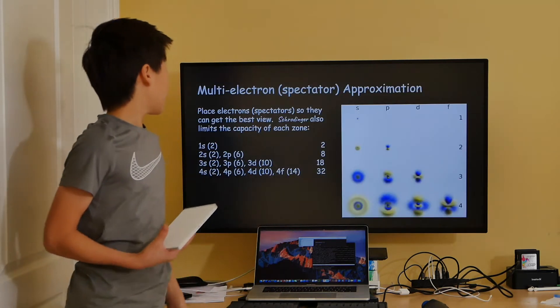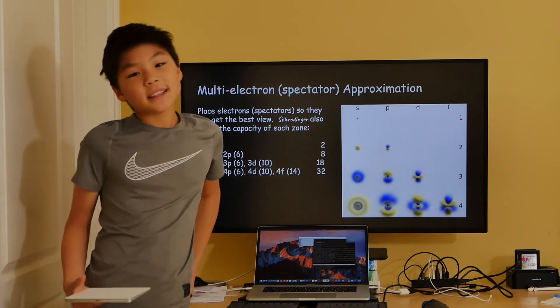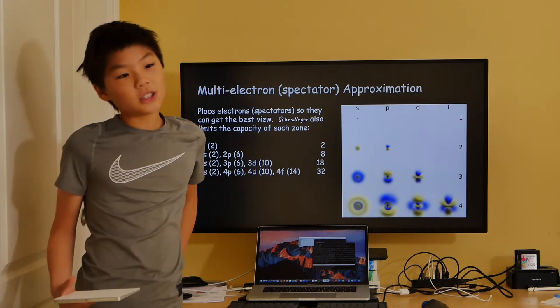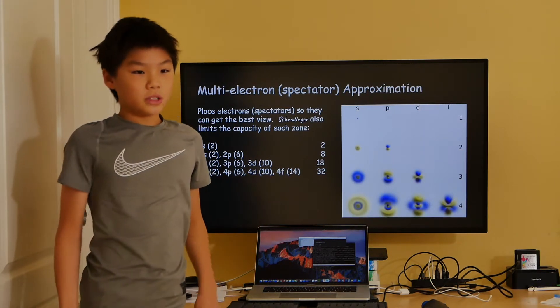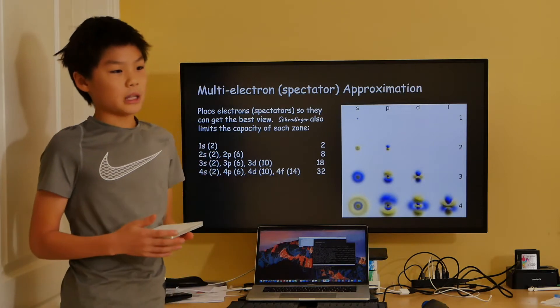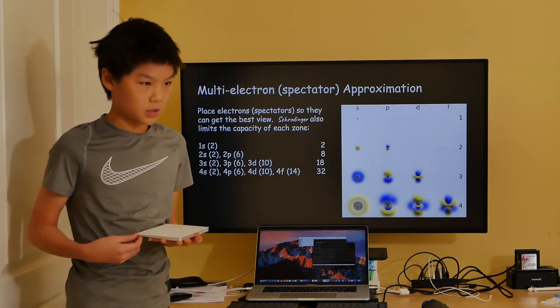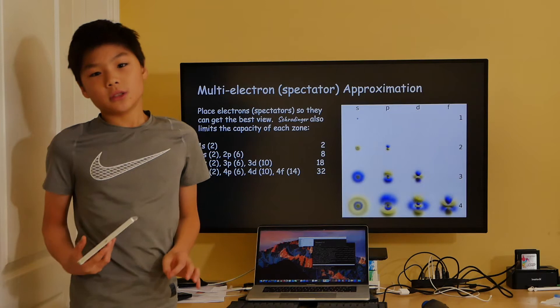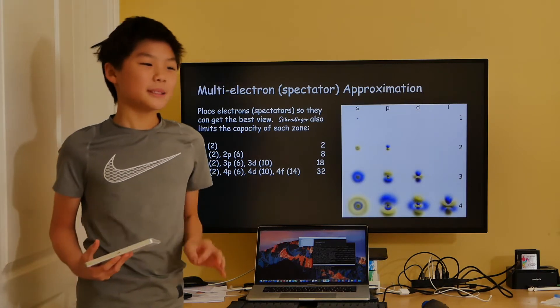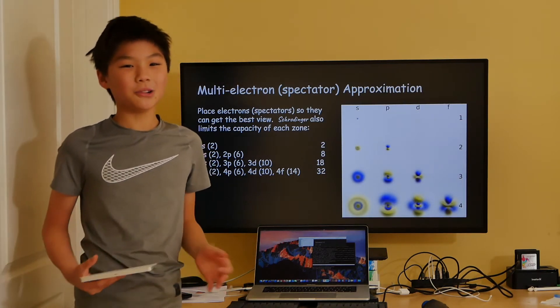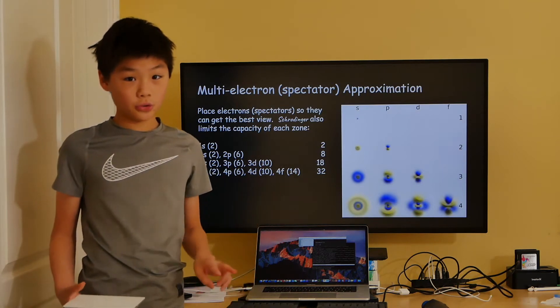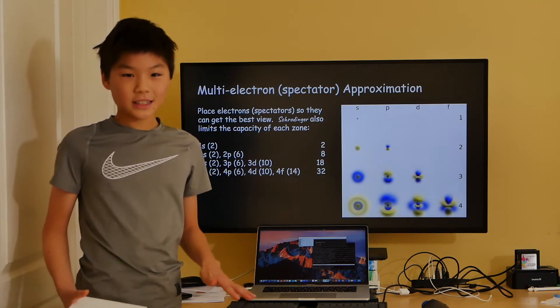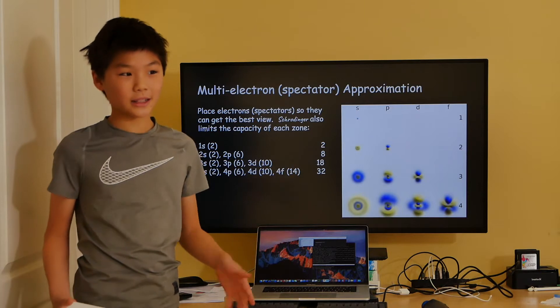Instead, scientists use an approximation. They assign electrons sequentially into zones that offer them the best view. Schrödinger also limits the capacity each of these zones can hold. The s orbitals can hold 2, the p orbitals can hold 6, the d orbitals can hold 10, and so forth.